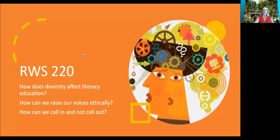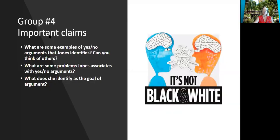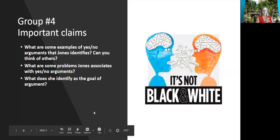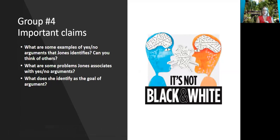I wanted to start by finishing up with some of the groups that we didn't hear from. If you have your notes from Monday and you remember what group you're in, please share. Group four: what are some examples of yes-no arguments, like these binary arguments where there's no middle ground, and what are some problems with yes-no arguments?